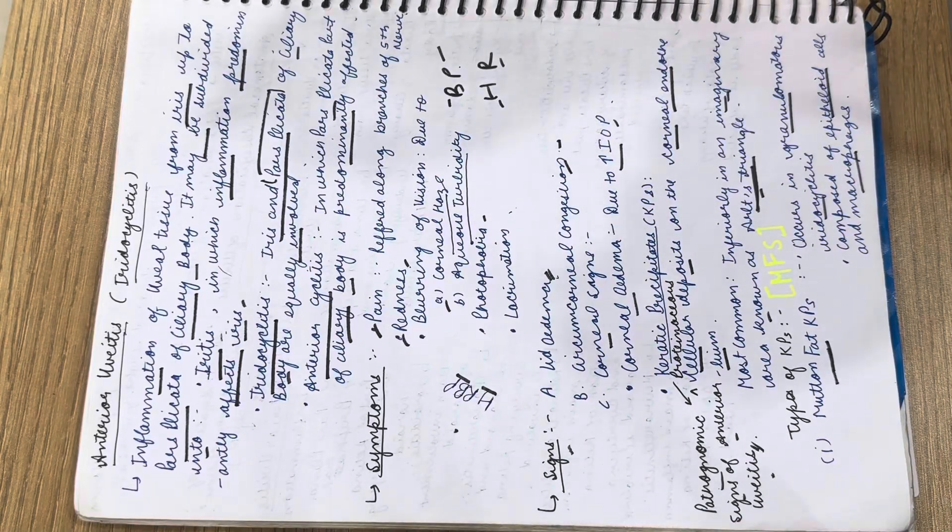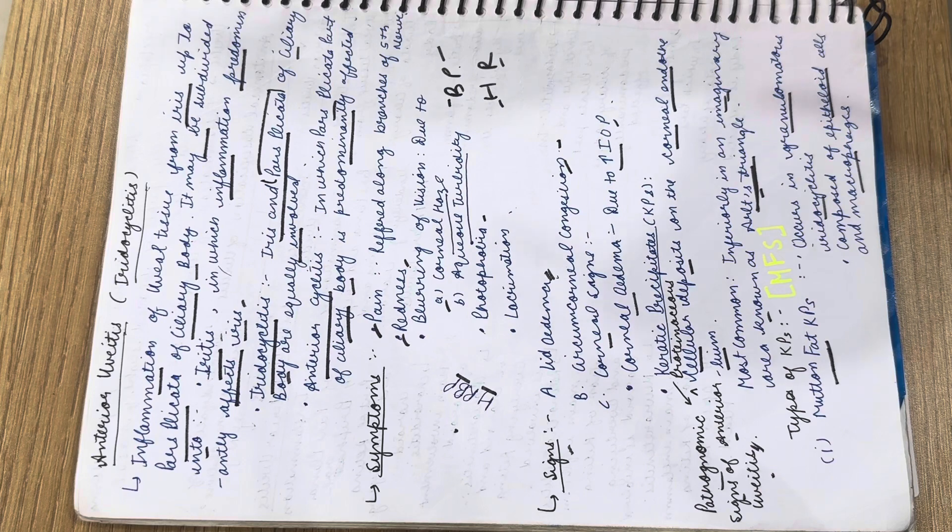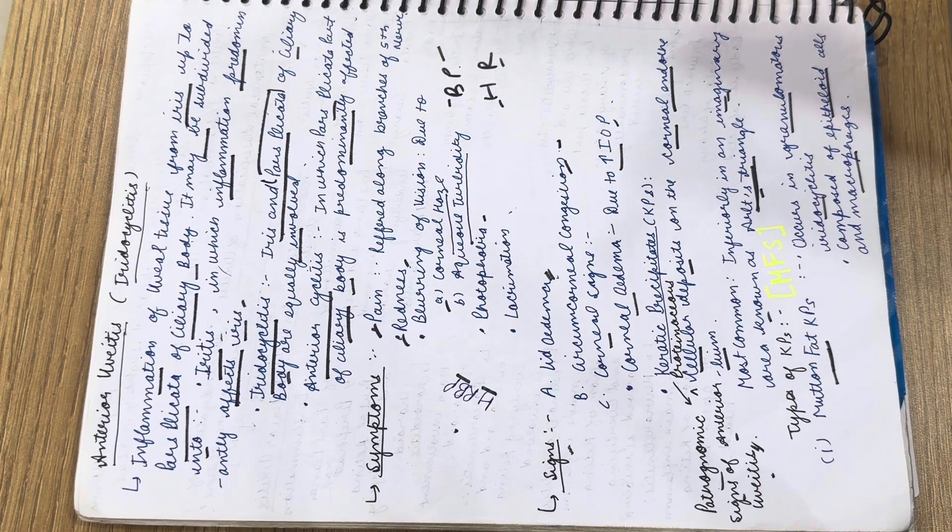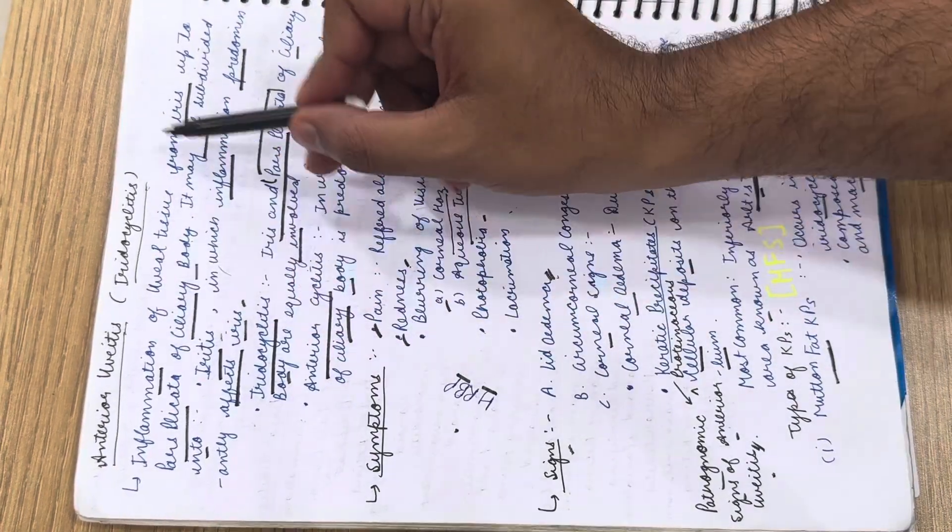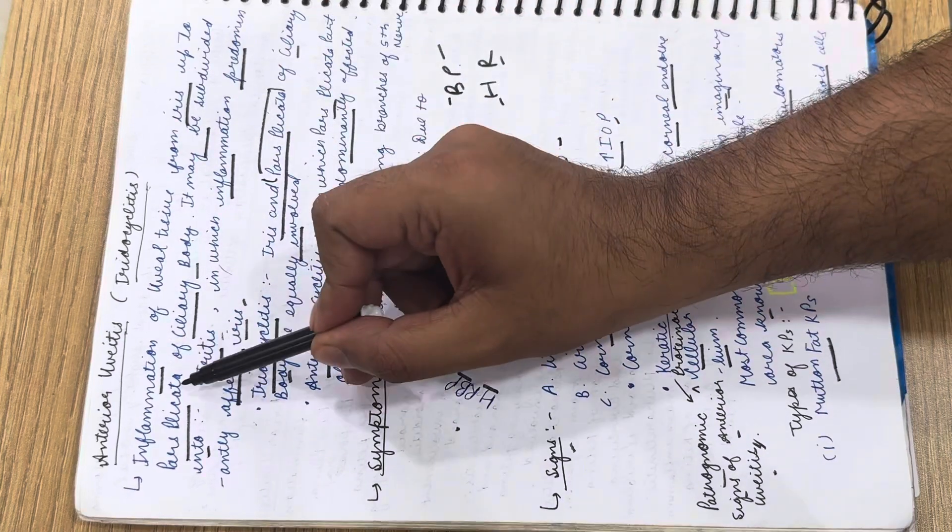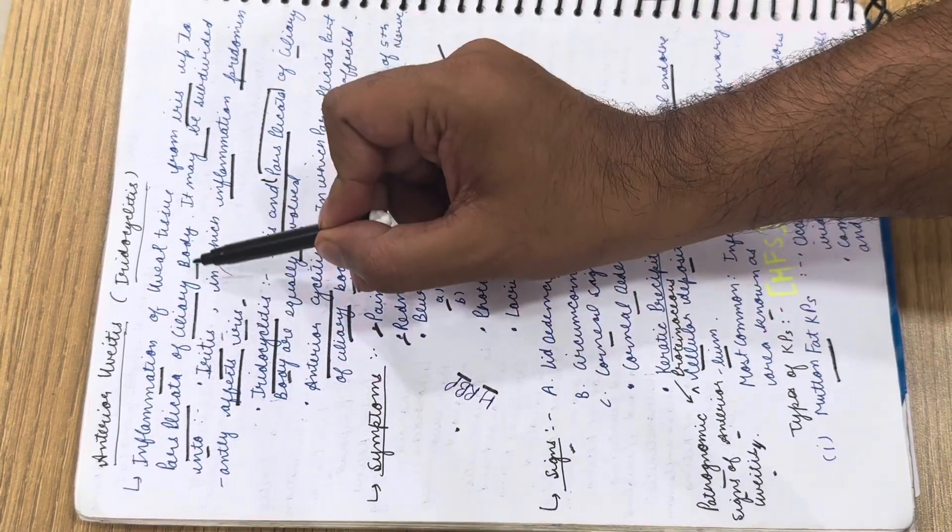Hello medicos, today we are up with the topic anterior uveitis or iridocyclitis. It's a very important topic and a favorite topic of examiners, with questions appearing in theory as well as MCQs. The definition is inflammation of the uveal tissue from iris up to the pars plicata of the ciliary body.